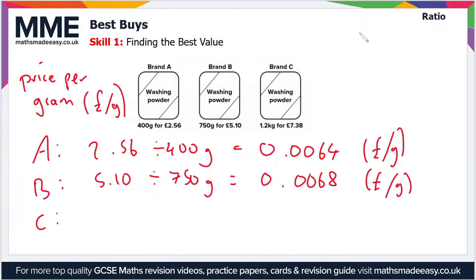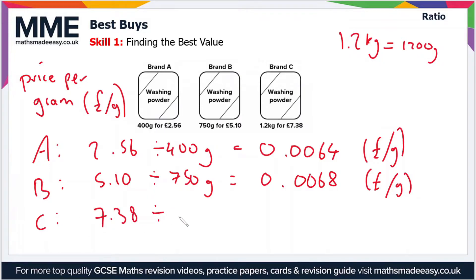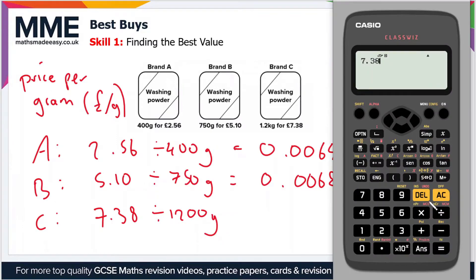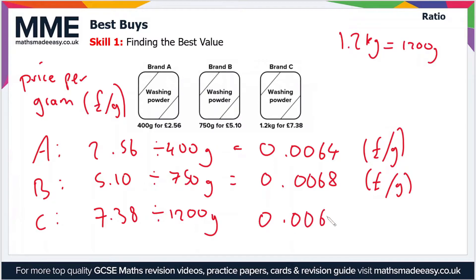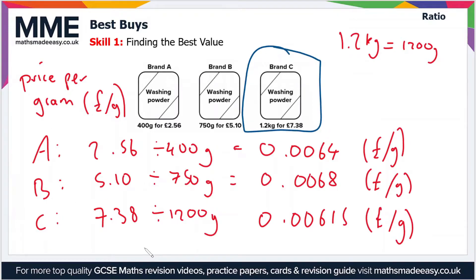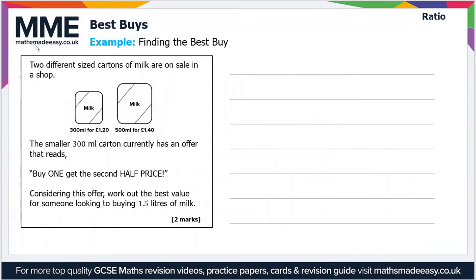For Brand C, the units are in kilograms, so 1.2 kilograms is equal to 1,200 grams. So we calculate £7.38 divided by 1,200 grams. Putting that into the calculator: 7.38 divided by 1,200 gives us 0.00615. That is the lowest price per gram, so Brand C is the cheapest and therefore the best value.